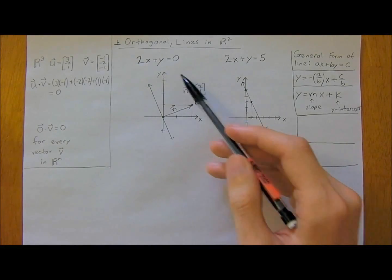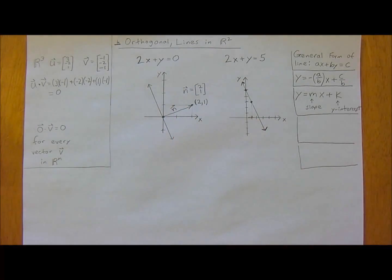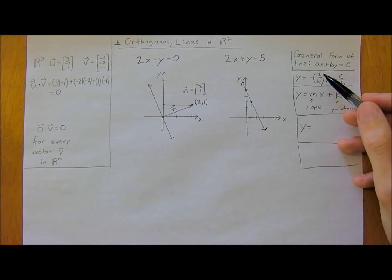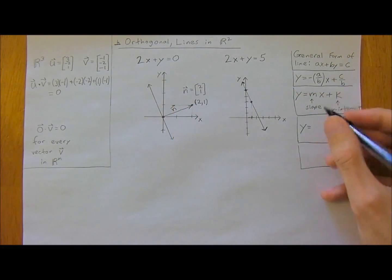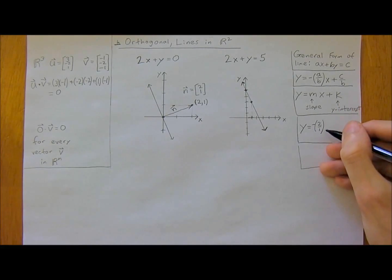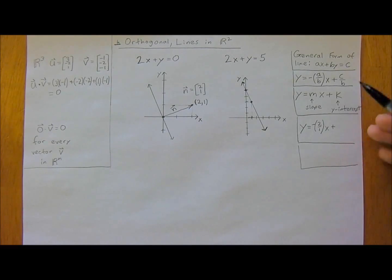So it represents our line 2X plus Y equals 0. Let's use this to represent that. Y is going to be equal to negative A over B, so negative 2 over 1, negative 2 over 1, the X-direction, plus K is just C over B, so 0 divided by 1, which is 0. And that is simply it.